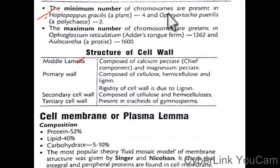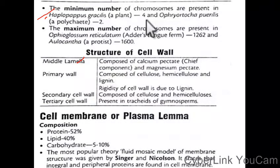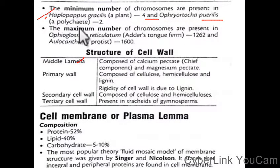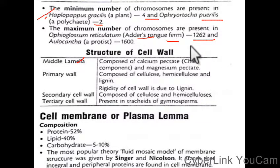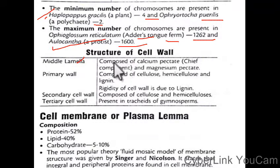The minimum number of chromosomes are present in Ophioglossum gracilis, a plant. The maximum number of chromosomes are present in Adder's tongue fern — 1262 — and a protist with 1600 chromosomes.